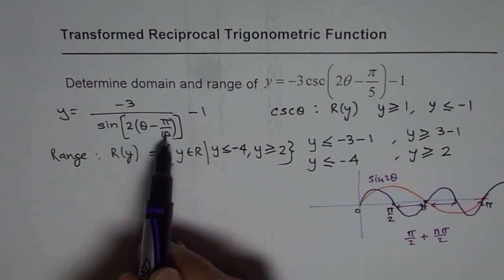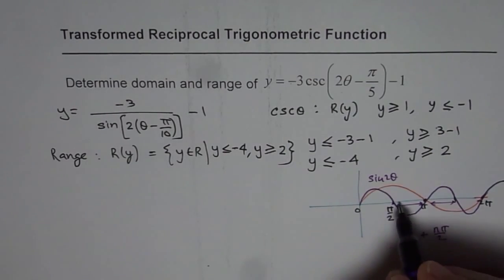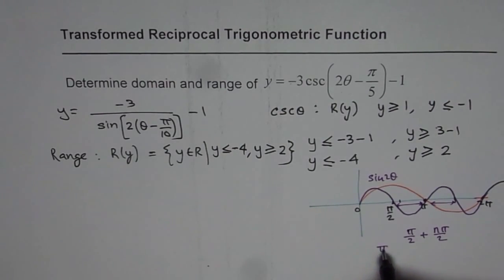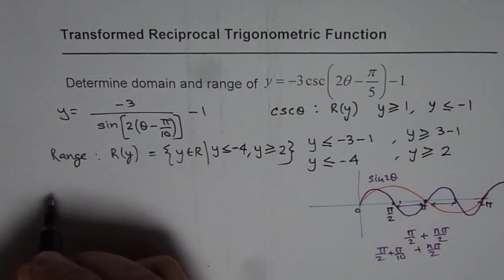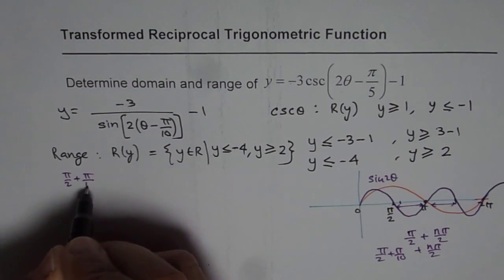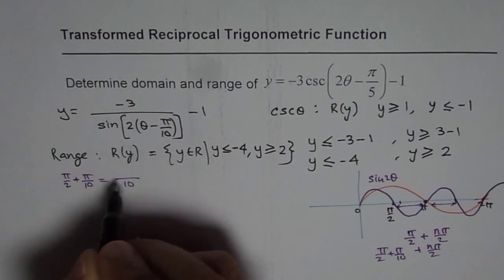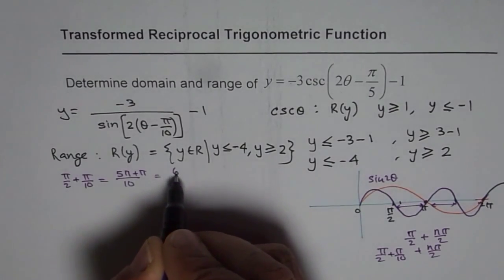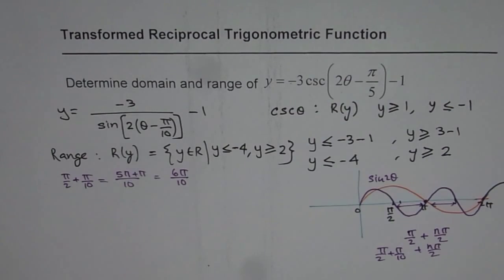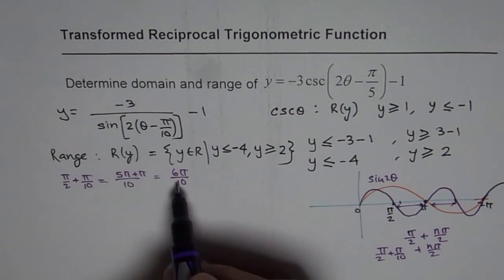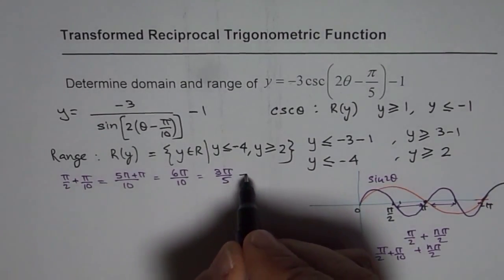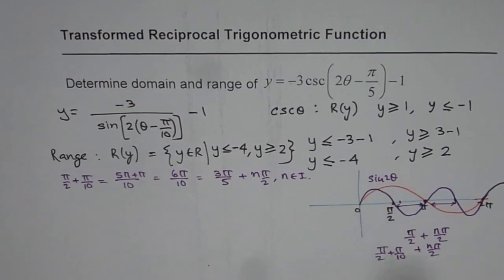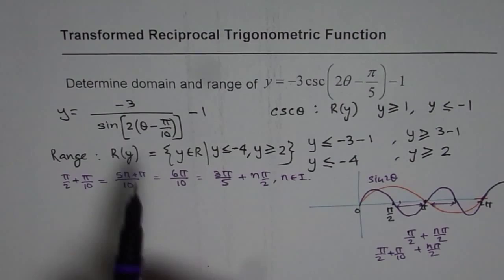When we translate by π/10 units to the right, the first zero itself gets shifted by π/10. So the first zero becomes π/2 + π/10, and then we add n × π/2. Let's calculate: π/2 + π/10, with common denominator 10, gives 5π/10 + π/10 = 6π/10, which simplifies to 3π/5. So the zeros are at 3π/5 + n × π/2, where n belongs to the integers.